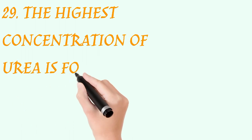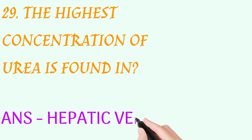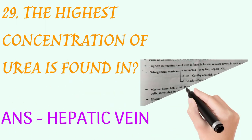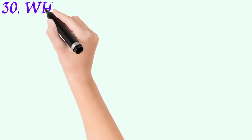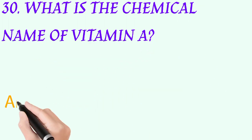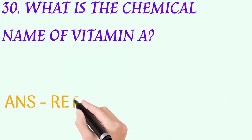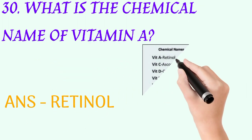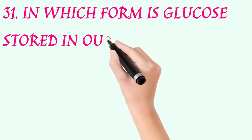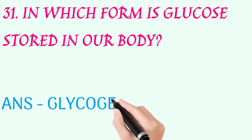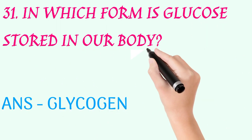The highest concentration of urea is found in? Answer: hepatic vein. What is the chemical name of vitamin A? Answer: retinol. In which form is glucose stored in the body? Answer: glycogen.